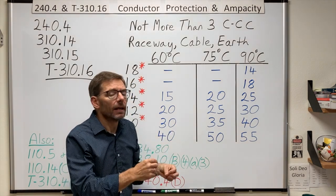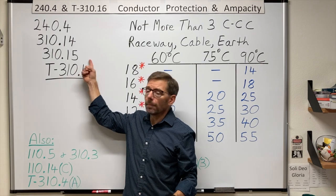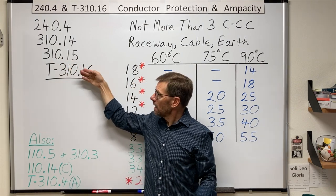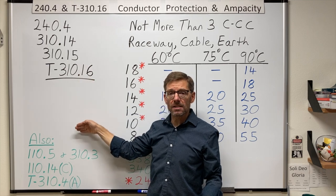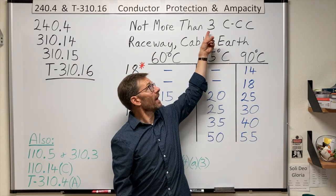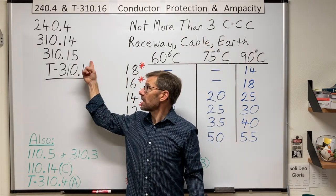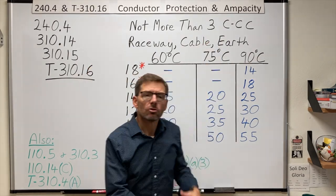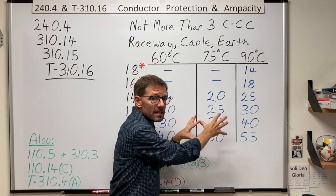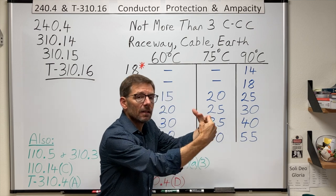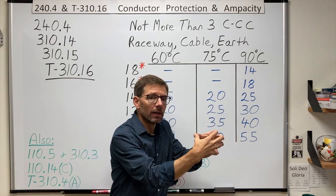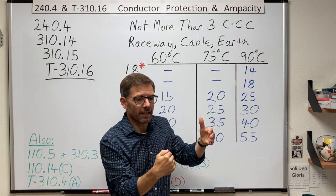Well, yes. Remember that modified thing back here? In 310.15c, it says use the ampacities from the tables, but it answers the question if I have more than three of them. Subsection C. Too much for this video, but what it basically tells me is I would use one of these ampacities and then de-rate it. I would have to take that number and reduce it slightly.